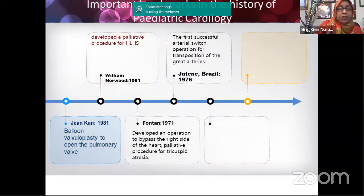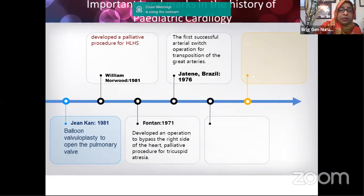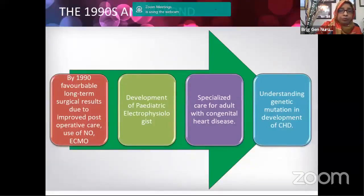The Norwood palliative operation for hypoplastic left heart syndrome was performed in 1981. The Jatene arterial switch operation was first successfully done by Jatene in 1976. Jean Kan in 1981 performed the first balloon valvoplasty on the pulmonary valve. Fontan in 1971 innovated how pulmonary circulation in single ventricle situations can be separated from oxygenated blood by directly bypassing deoxygenated blood into the lungs. In the 1990s there were many further innovations.